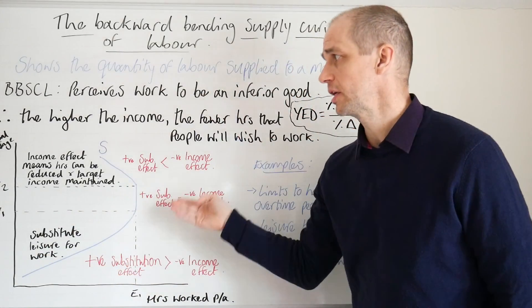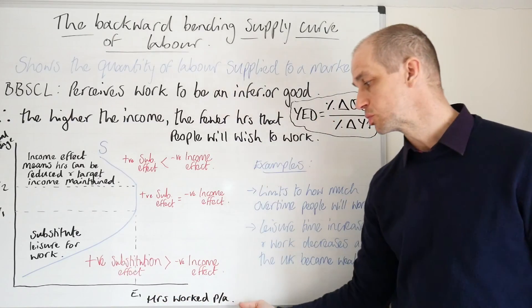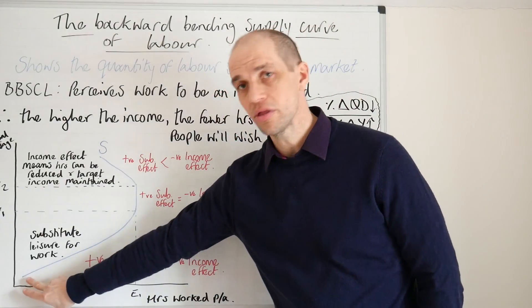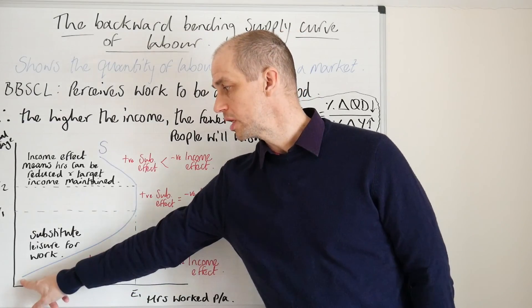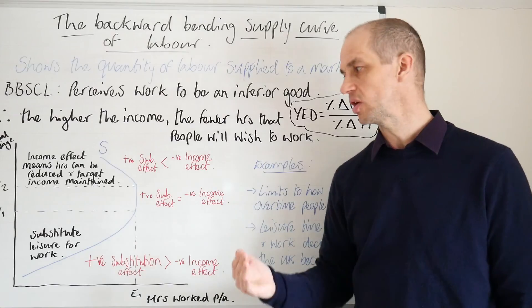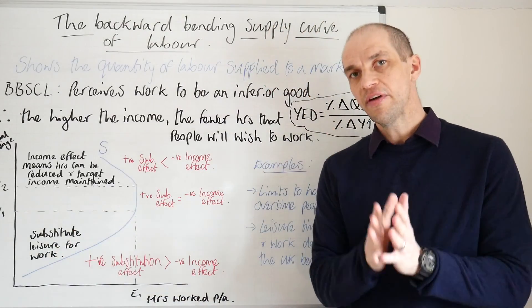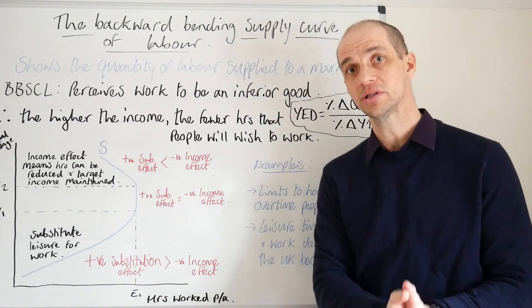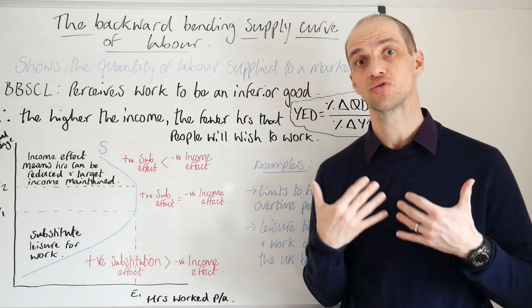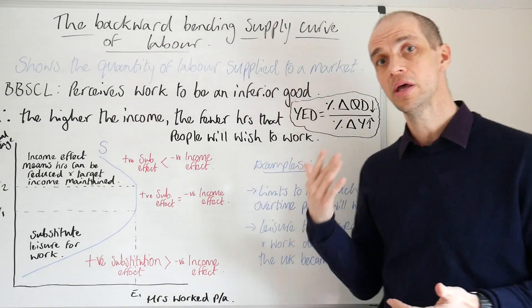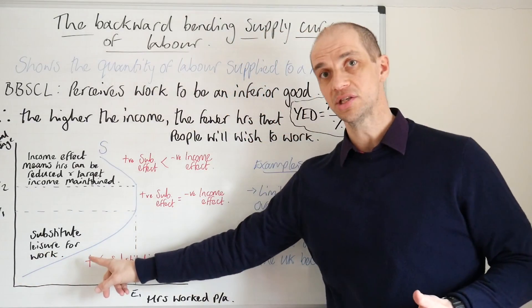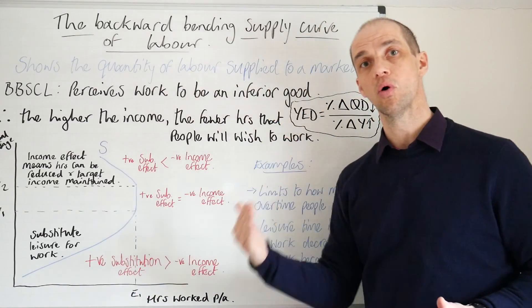Now, this is our backward bending supply curve. We've got the real wage rate on our y-axis and the number of hours worked per annum along our x-axis. Starting at the bottom of this curve denoted in blue, we can see that initially there is going to be a very high substitution effect. There's a positive substitution effect here because it's very profitable to actually start substituting leisure hours for work. When you substitute leisure hours for work at these low income levels, you can see that your income increases dramatically, increasing your purchasing power and disposable income substantially. As you continue up this supply curve, you are substituting your leisure time for work time.